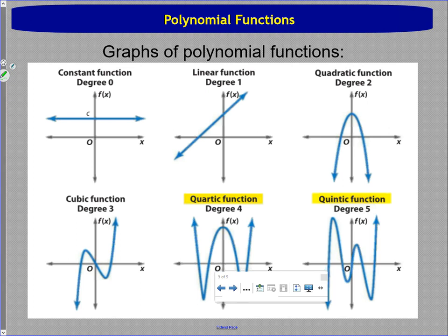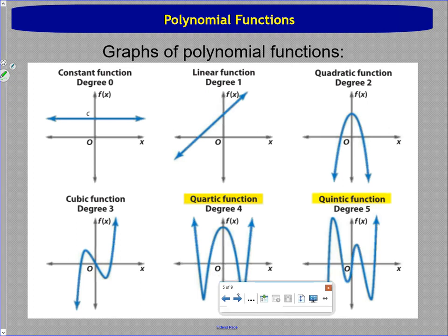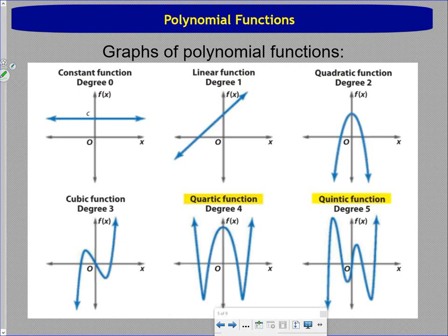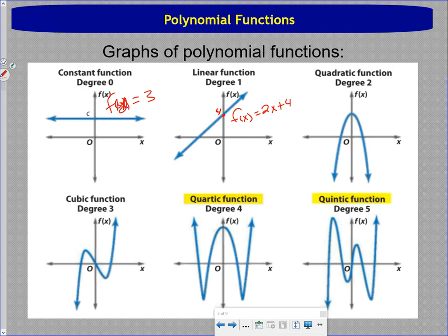There are a lot of different families of functions — we talked about the different degree polynomial functions. You're familiar with the constant function, degree zero, like f of x equals 3: flat line, slope of zero, never changes. A linear function, like f of x equals 2x plus 4, has a slope of 2 and y-intercept of 4. Quadratic functions — we've spent time with these. An upside-down one would be something like f of x equals negative 2x squared plus 3, opening downward.